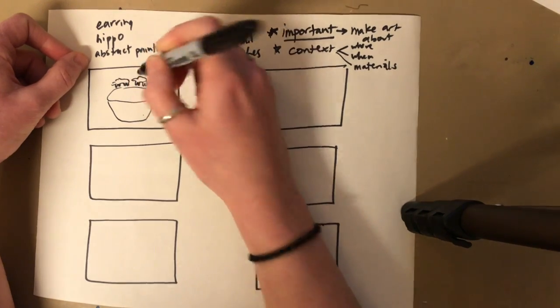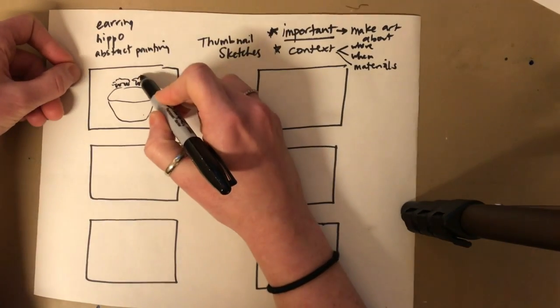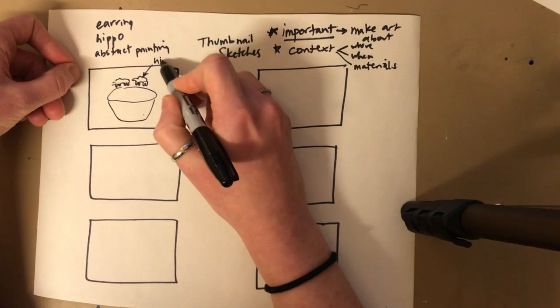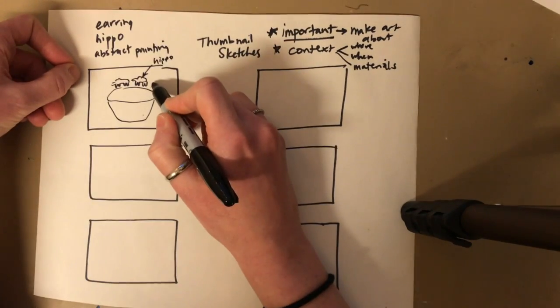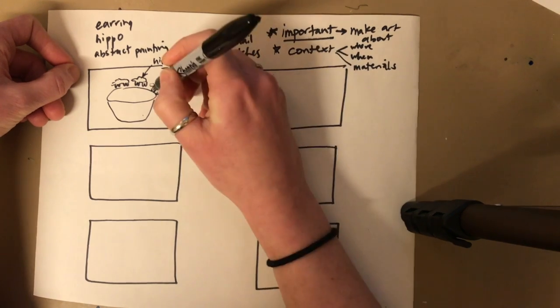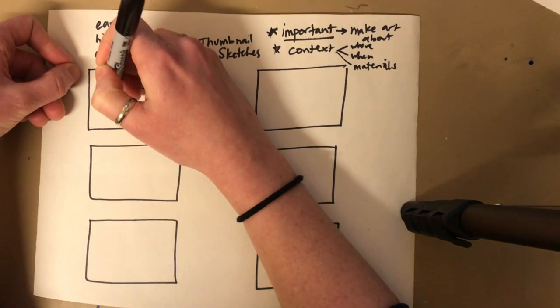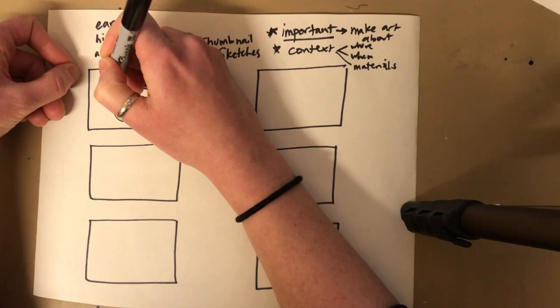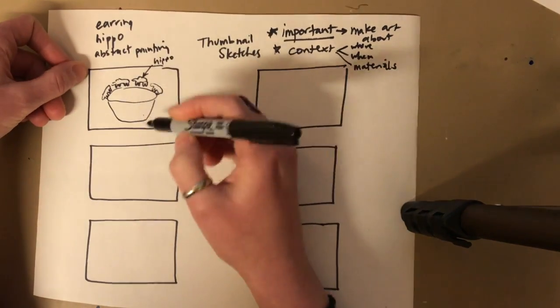Now if your drawings are not clear you can also label things in your thumbnails because you might forget what you've drawn. It's gonna be hard to communicate with other people with really fast drawing sometimes so labeling will help.